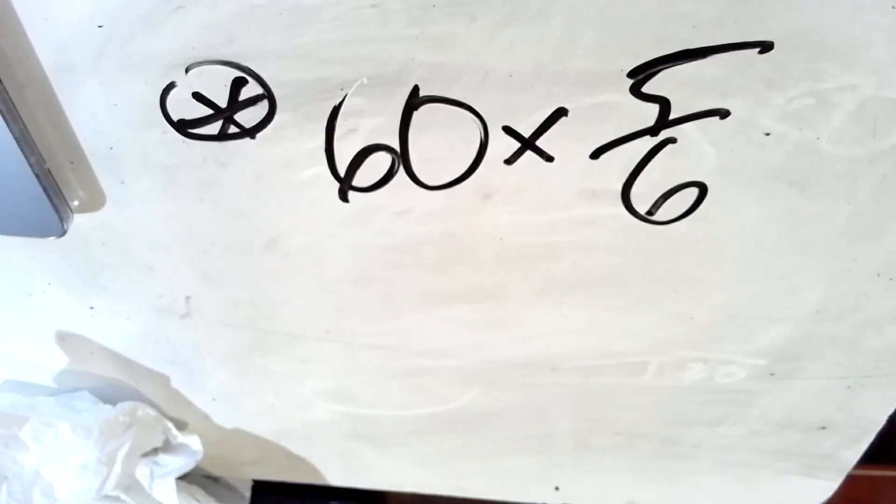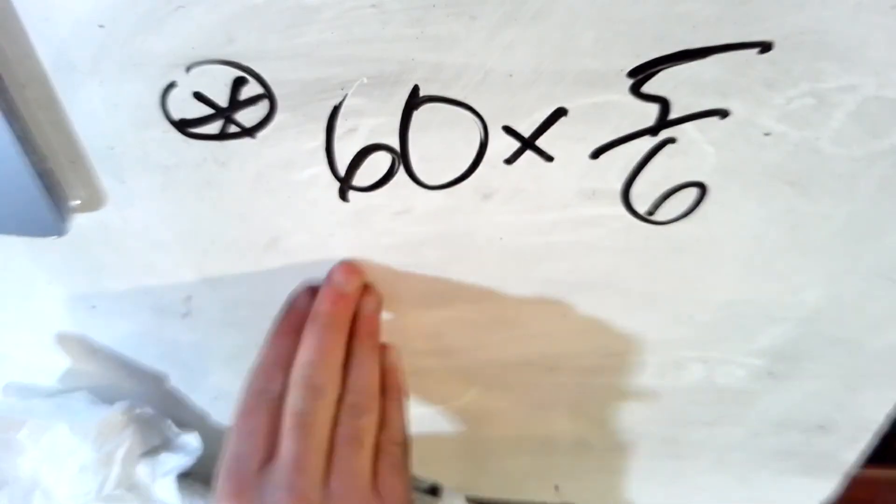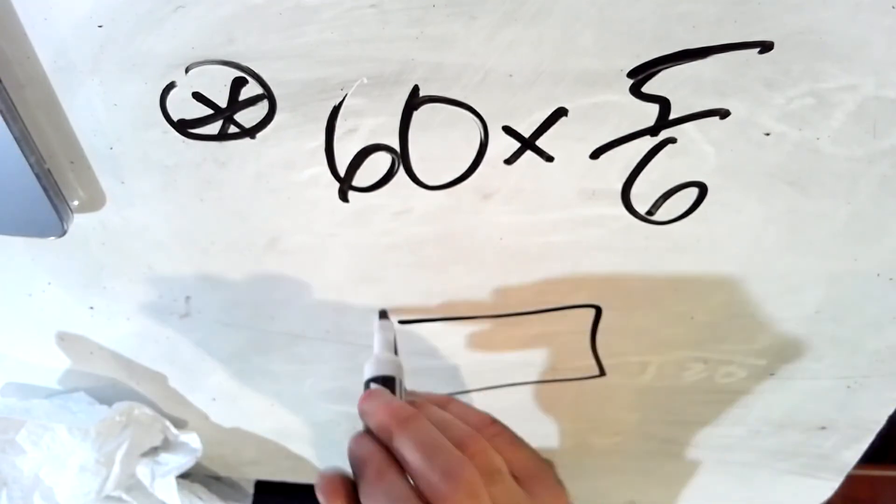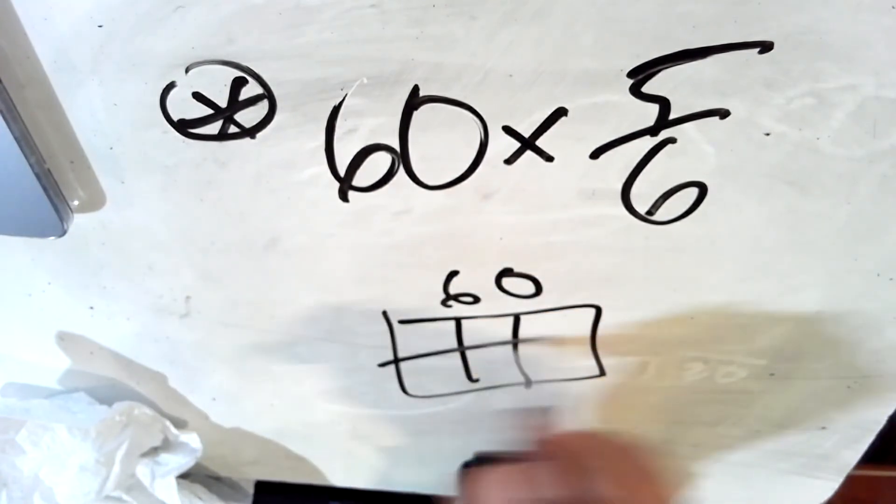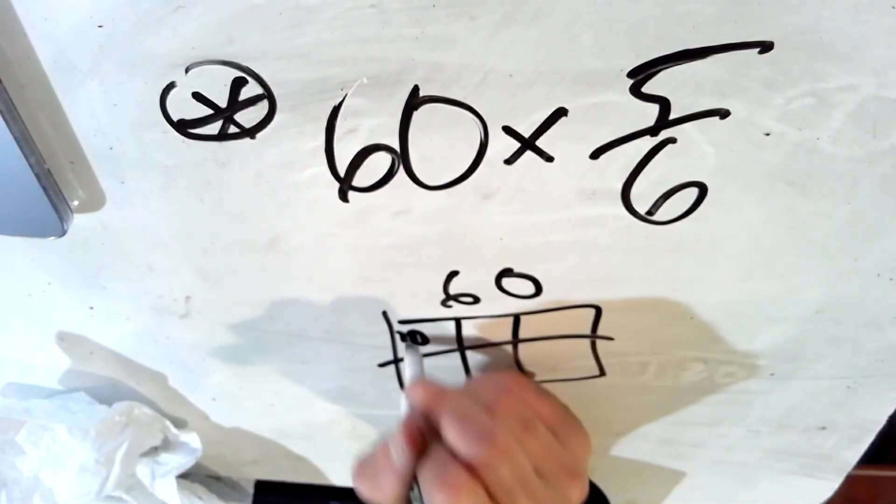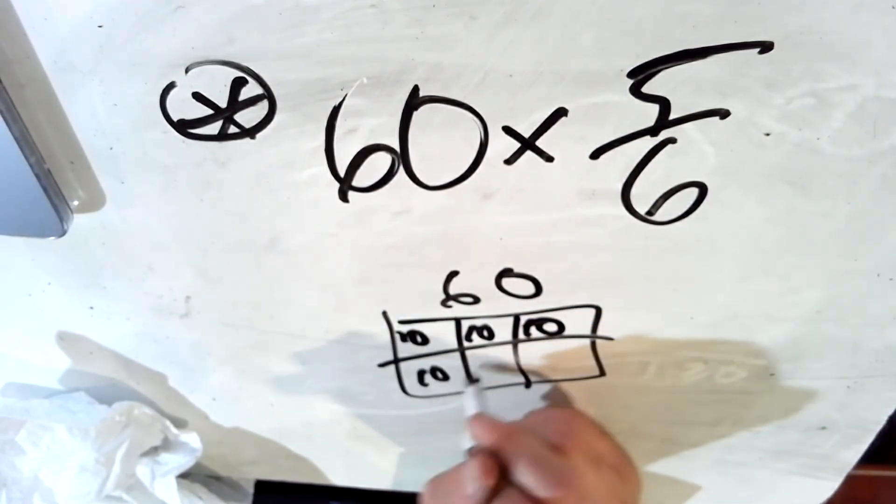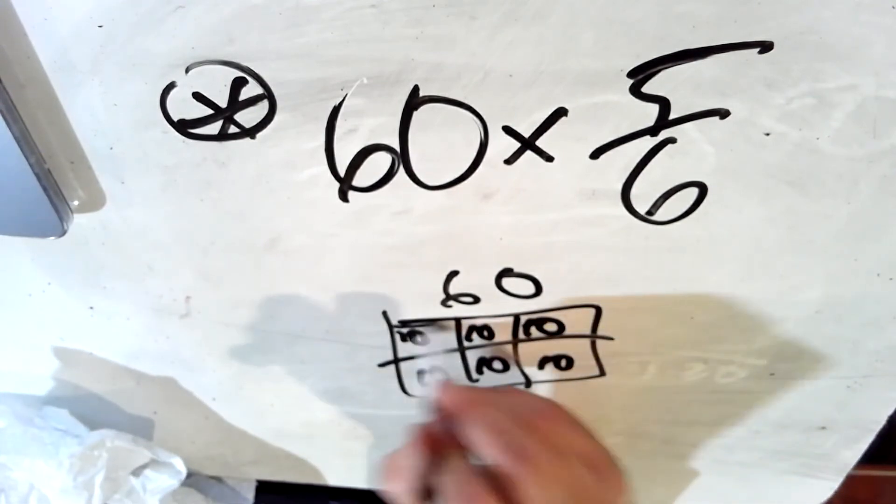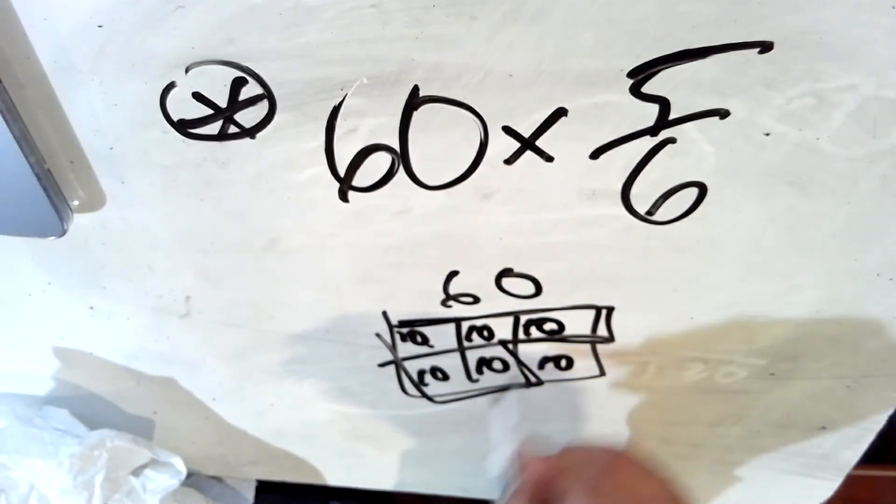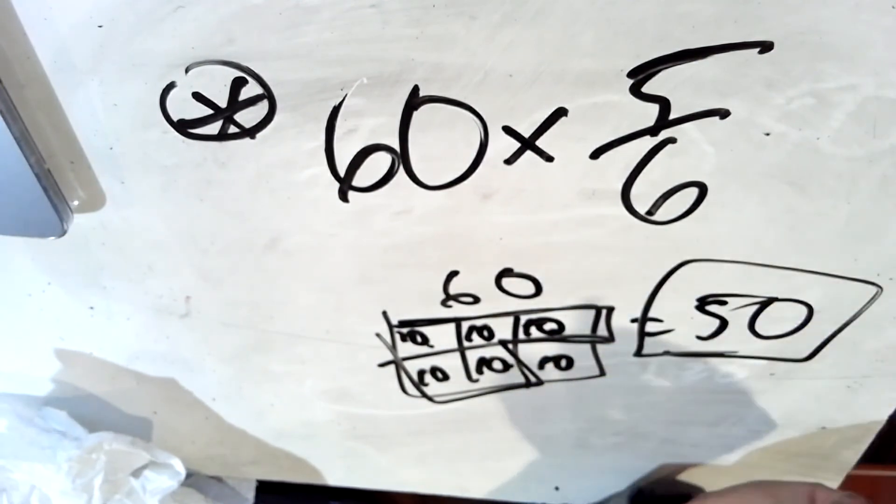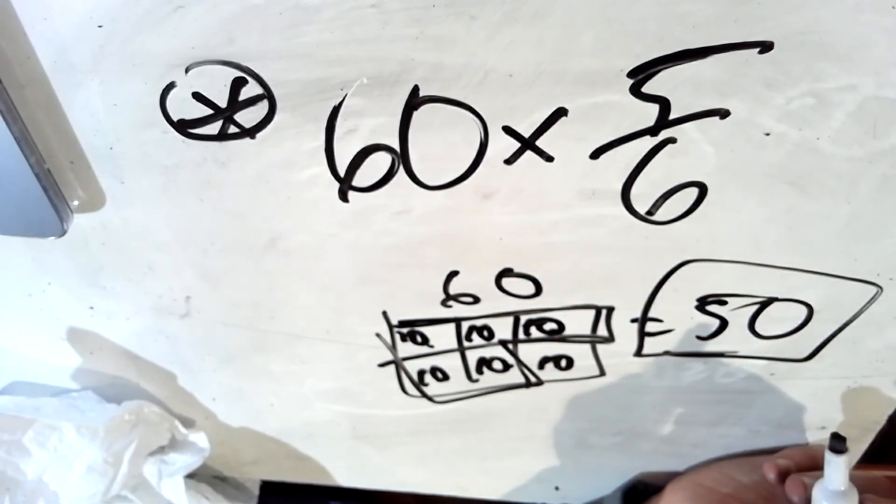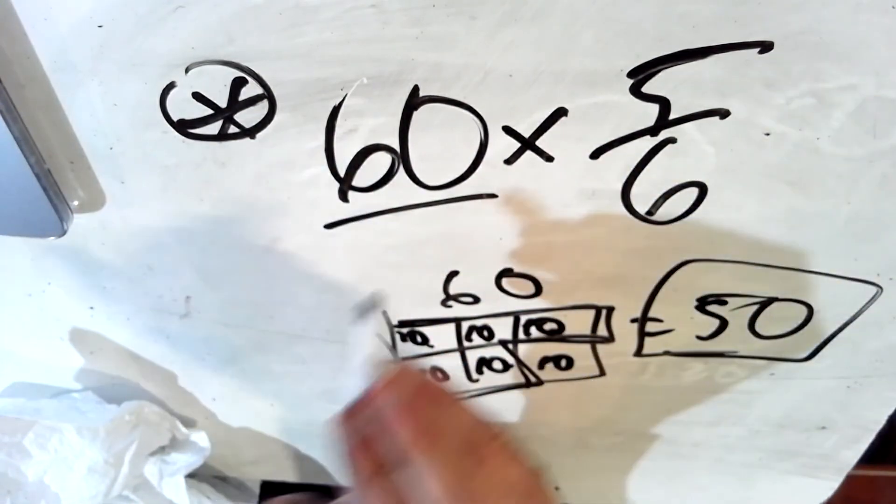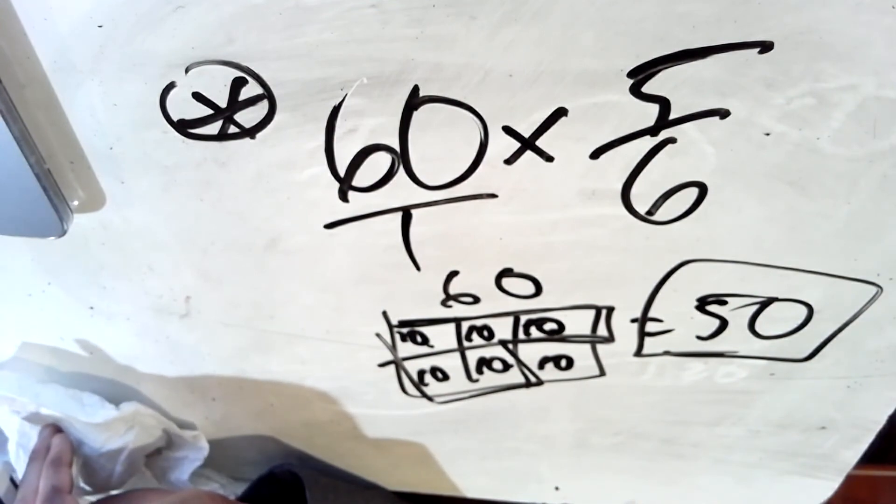I'd like you to try this one on your own. 60 times 5 sixths or 5 sixths of 60. Figure out what you think that equals. What is 5 sixths of 60 or 60 times 5 sixths? You could think of 60 and break it into sixths. 1 sixth of 60 is 10. 6 sixths of 60 is 60, of course. 5 of those sixths, 10, 20, 30, 40, 50, has to be 50. Your answer has to be 50.